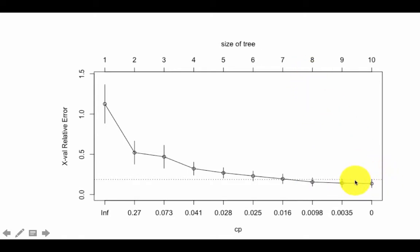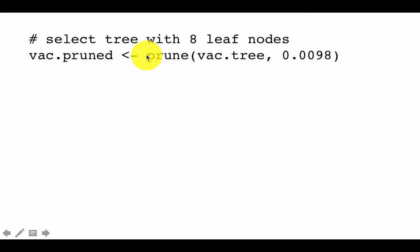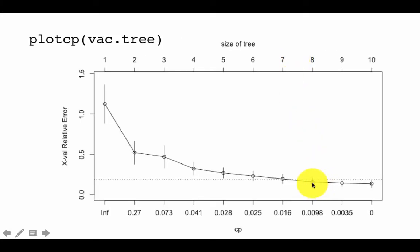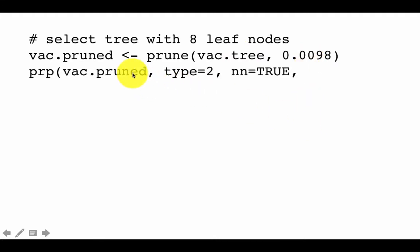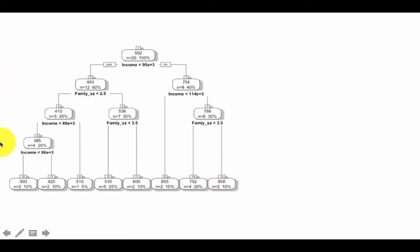We can also use plot(cp, vac.tree) to generate the plot and visually find the node just below the line, which is eight. To select the tree with eight leaf nodes, we use the prune function with the CP value of 0.0098 corresponding to node size eight. We prune the tree and print the pruned result. As expected, the pruned tree has eight nodes, which is our optimal tree.